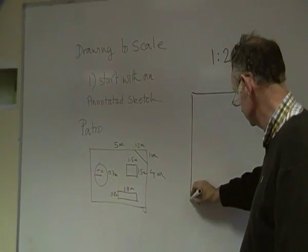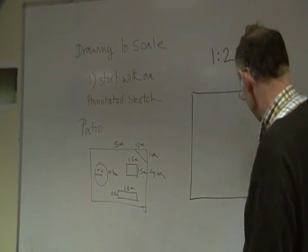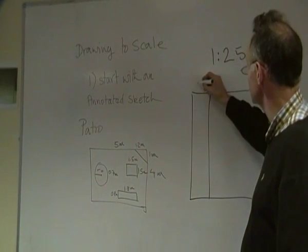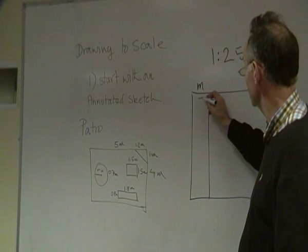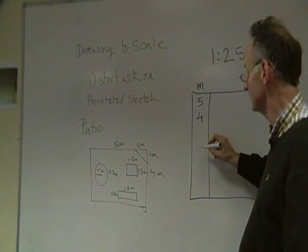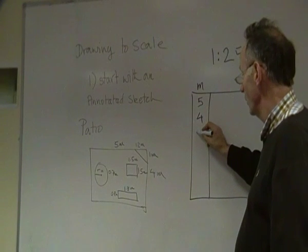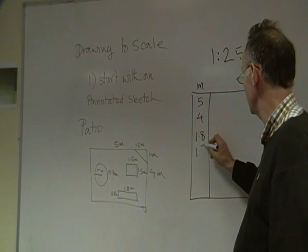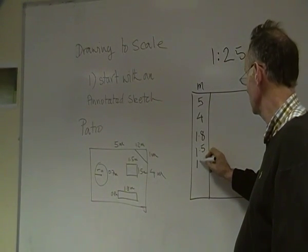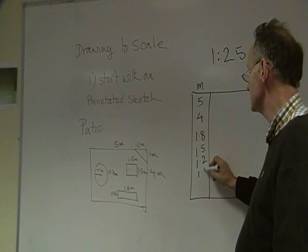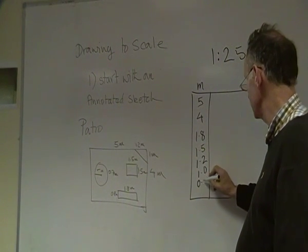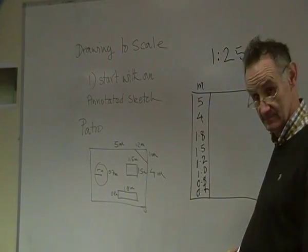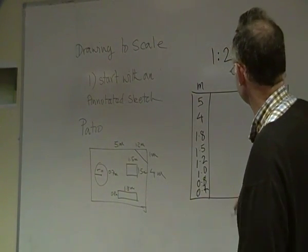So I draw up my table and list the dimensions. My first column is going to be in meters, so I've got 5, 4, 1.8, 1.5, 1.2, 1.0, 0.8, and 0.7. Not very well laid out, but that's okay.